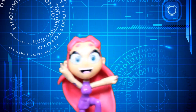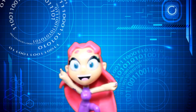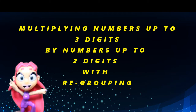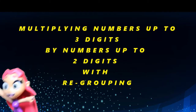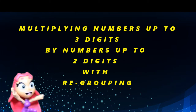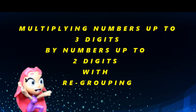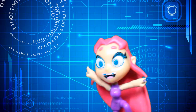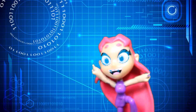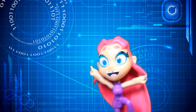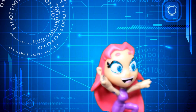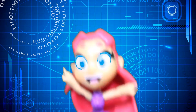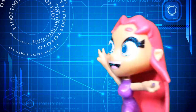Now, today we will talk about multiplying numbers up to three digits by numbers up to two digits with regrouping. We can use the short method and the lattice method.